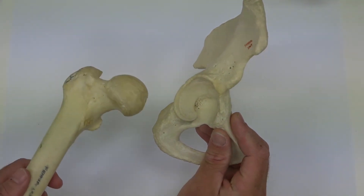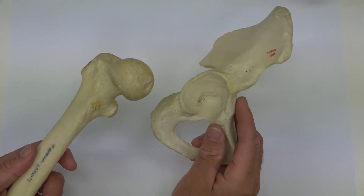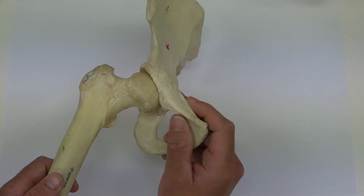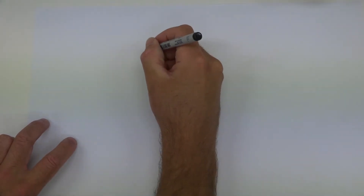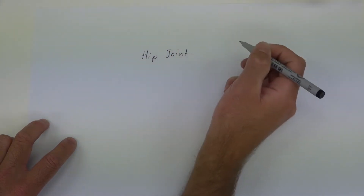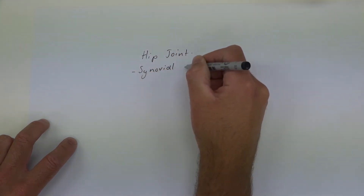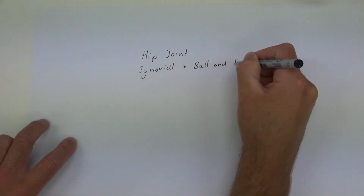Bringing the femur in, we can see that the head of the femur is ball-shaped and the acetabulum is like the socket. This is what helps form the ball and socket joint of the hip. Because it is a ball and socket joint, it means that it is multi-axial in its nature. The hip joint is synovial and also ball and socket.